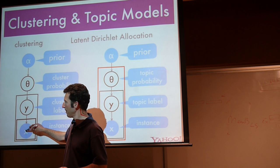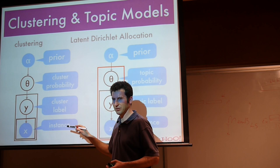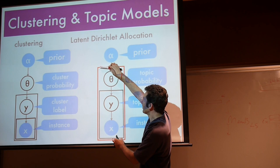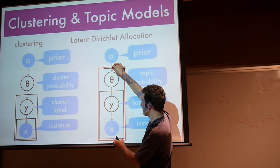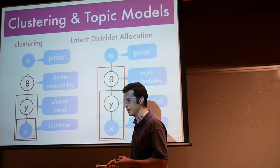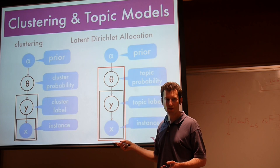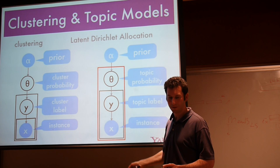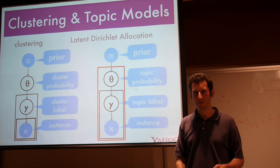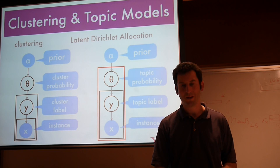For the topic model, it's essentially the same structure, but all the plates have moved one level out. Each document in its own right obtains a distribution over topics rather than clusters, and for each word there's a separate variable which decides which topic I draw the word from. While this is super popular in the context of multinomials, there's nothing to prevent you from having a Gaussian emissions model. People haven't done that to a large extent, and I'm actually surprised — there's no reason why you shouldn't use a Gaussian emissions model here.